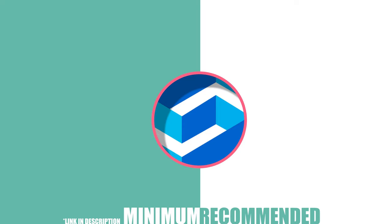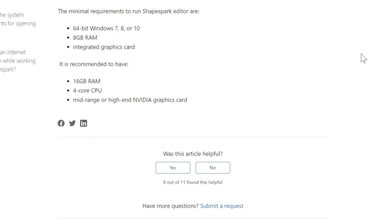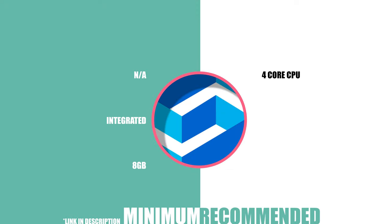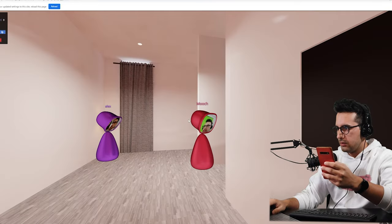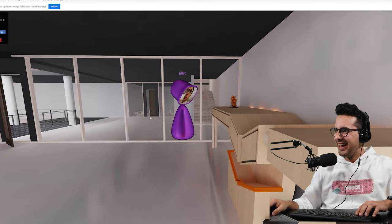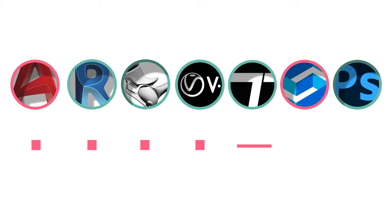For Shapespark, they want a 64-bit Windows 7, 8, or 10 OS. For minimum specs, they want 8 GB of RAM and an integrated graphics card — they don't mention a processor. For recommended, they want a four-core CPU, 16 GB of RAM, and a mid-range or high-end Nvidia graphics card. The requirements are honestly pretty modest. I use Shapespark and had no problems running it, but if you only have the minimum specs, you're probably going to struggle.